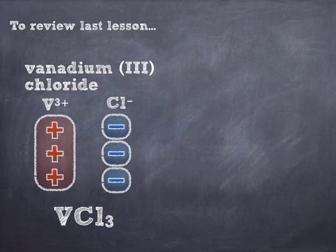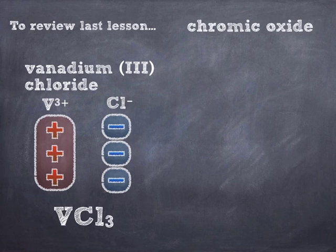Criss-cross takes care of that if you want to use it — the 3 would go down to the subscript after the chloride, and then the 1 would go down to the subscript after the vanadium. That's totally fine, but this is conceptually what's going on. Criss-cross is really nice but it is a little bit of a gimmick, so you want to make sure you understand what's going on behind it.